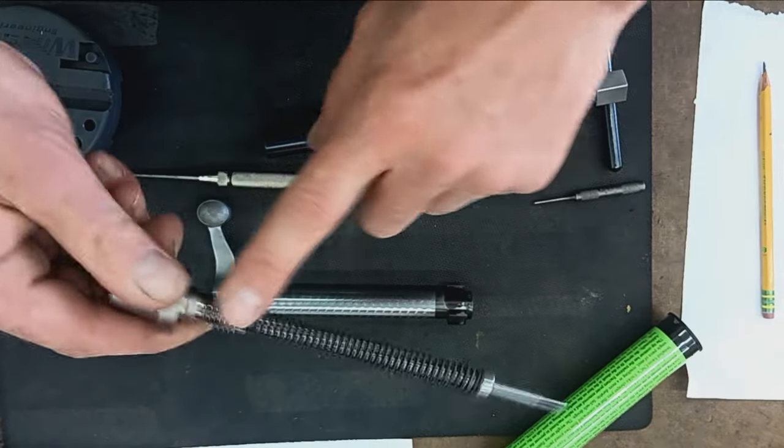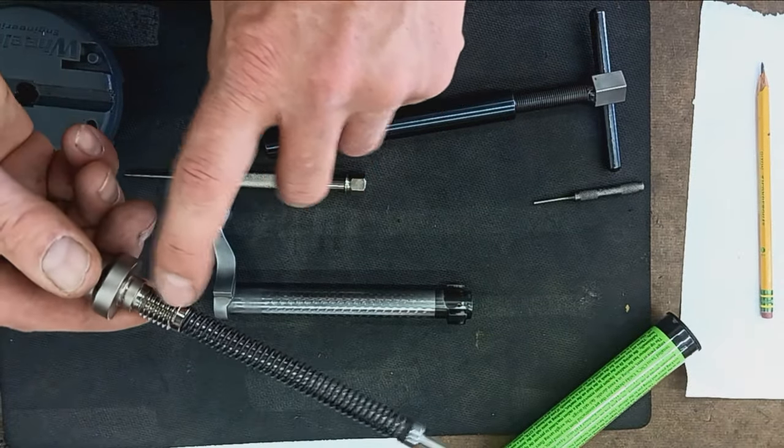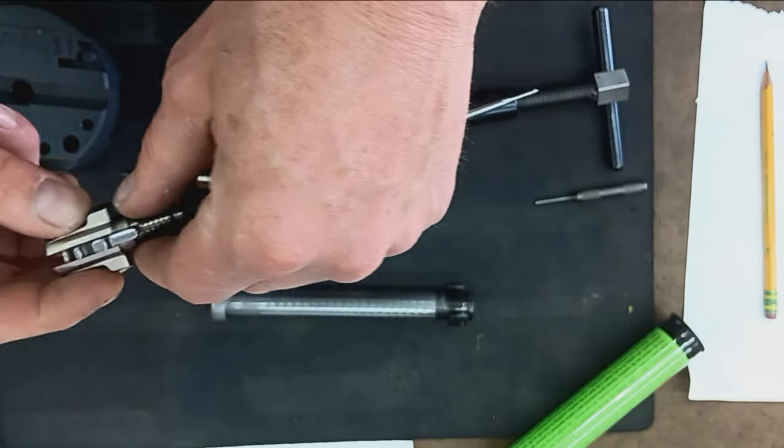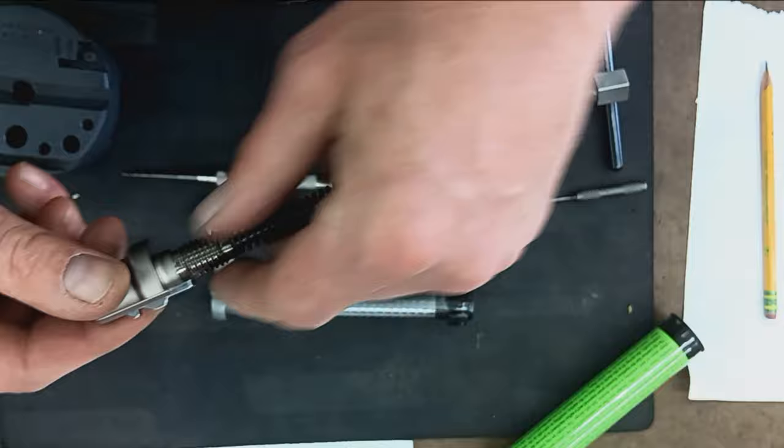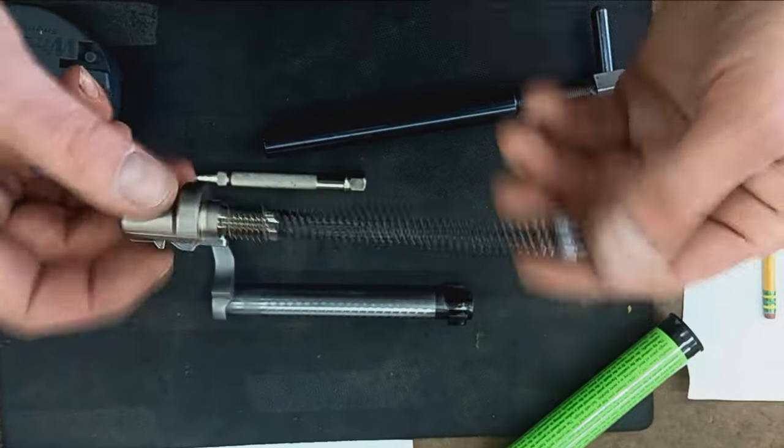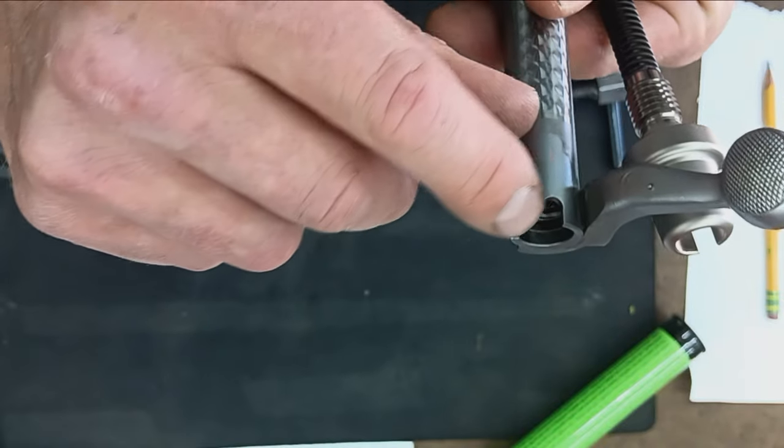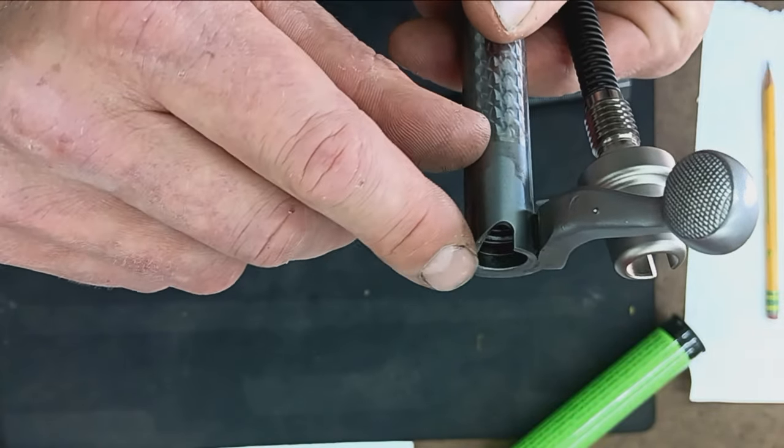I think he does recommend a little bit of high quality lithium style grease here on the threads just to keep it from binding and have a smooth operation and all that good stuff, and then obviously you'd want to grease your camming surface here and anything that's metal-to-metal contact.